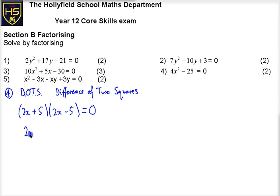We can say that 2x plus 5 is 0 or 2x minus 5 is 0. So straight ahead, we can take away 5 divided by 2. We can say that x is minus 5 over 2 or add 5 divided by 2. So plus or minus 5 over 2. Okay, and they're my two solutions.